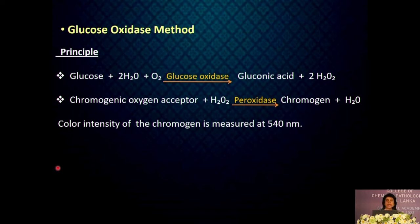Now we move to the glucose oxidase method. Glucose oxidase catalyses glucose to gluconolactone and hydrogen peroxide. Addition of a chromogenic oxygen acceptor and peroxidase forms a colored compound.